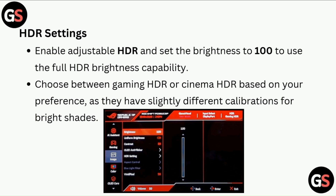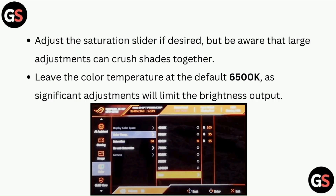For HDR settings, enable adjustable HDR and set the brightness to 100 to use the full HDR brightness capability. Choose between gaming HDR or cinema HDR based on your preference, as they have slightly different calibrations for bright shades. Adjust the saturation slider if desired, but be aware that large adjustments can crush shades together.